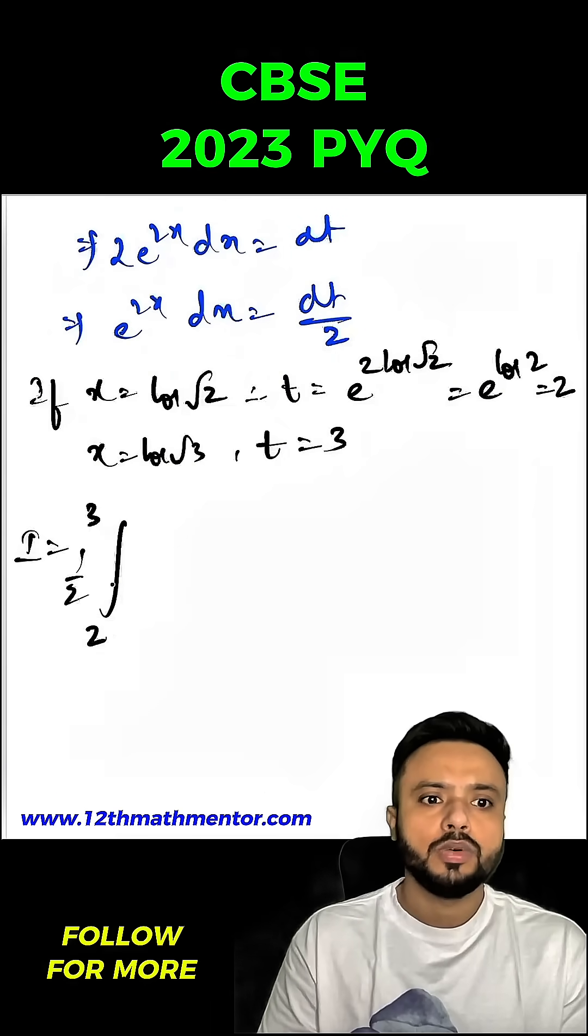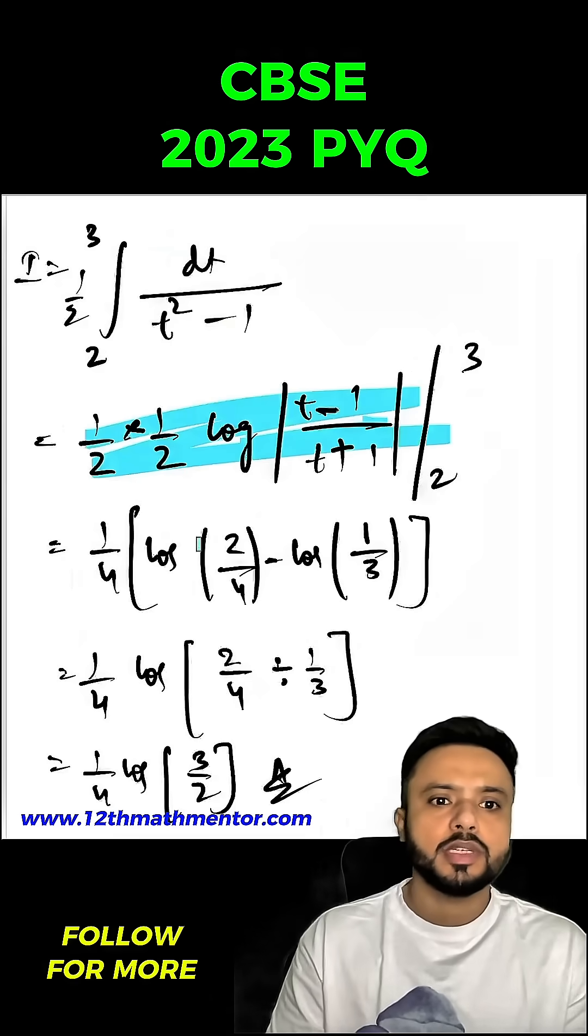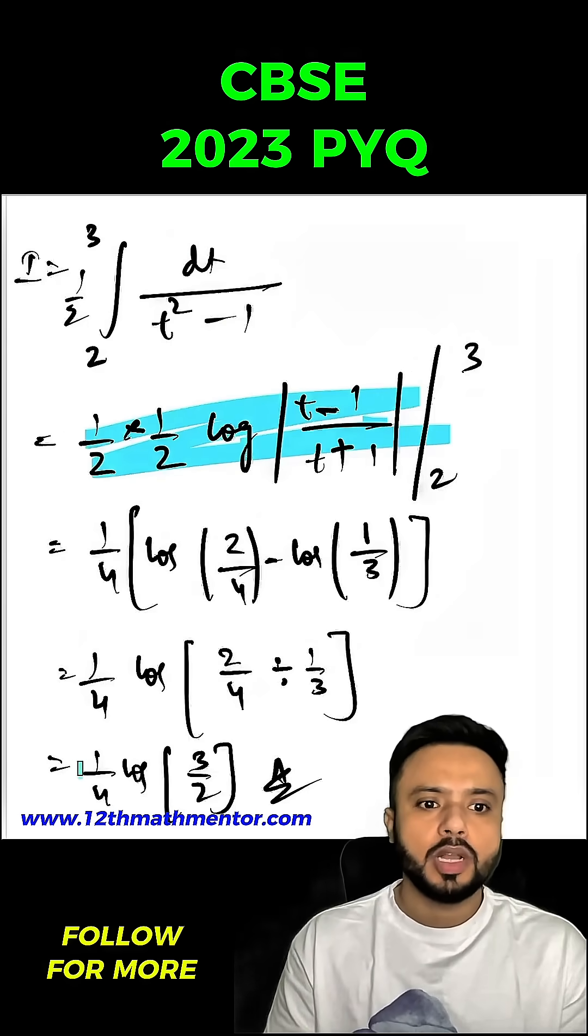As integral of 2 to 3, 1 by 2 dt by t square minus 1. So here we can use the formula of dx upon x square minus a square, and then we will substitute the limits.